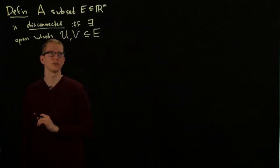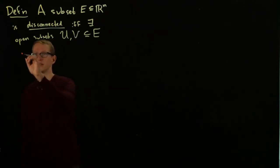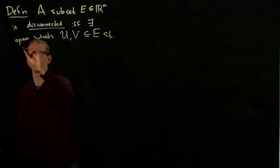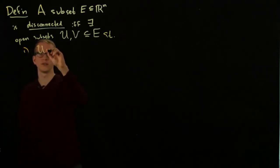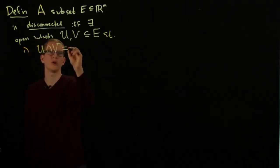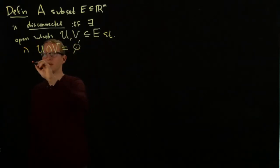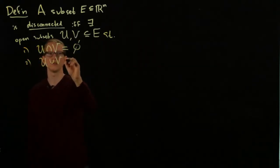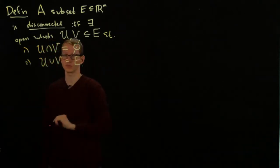It's disconnected if and only if there exist such open subsets satisfying two conditions: first, they are disjoint, meaning they have no common intersection, and second, their union is equal to E.